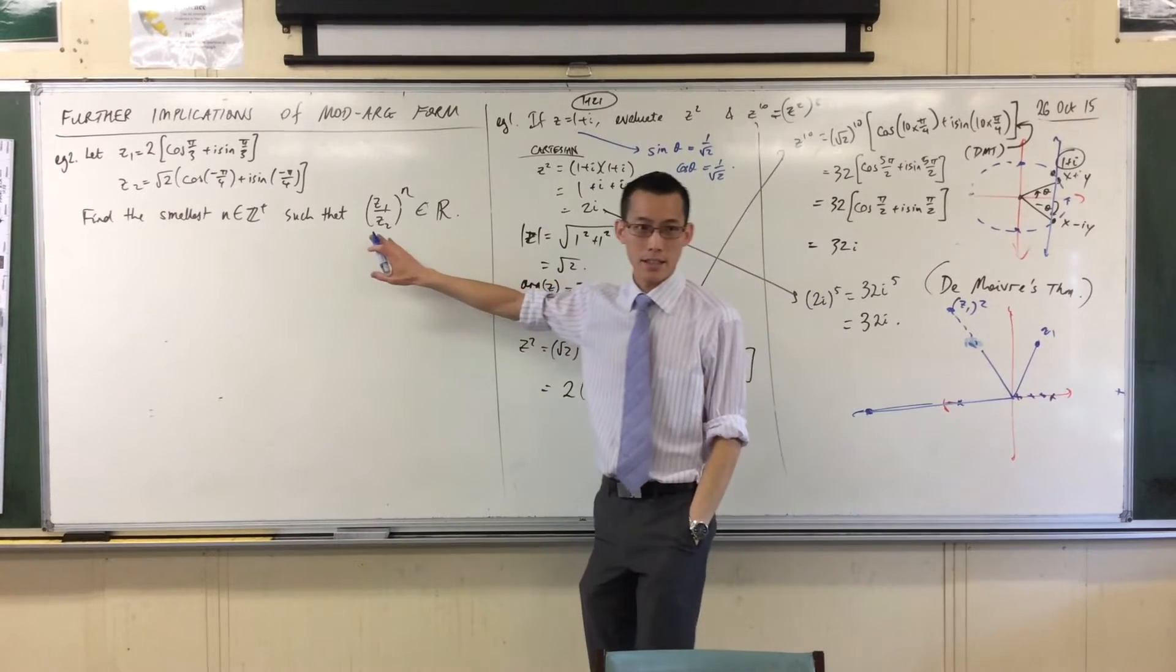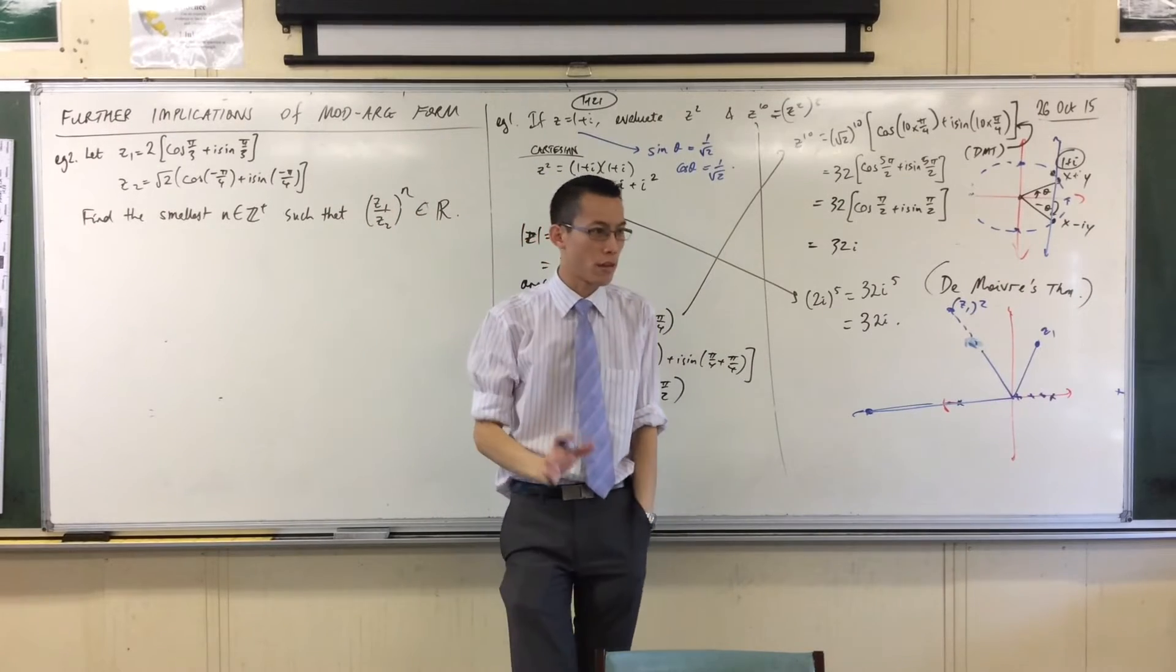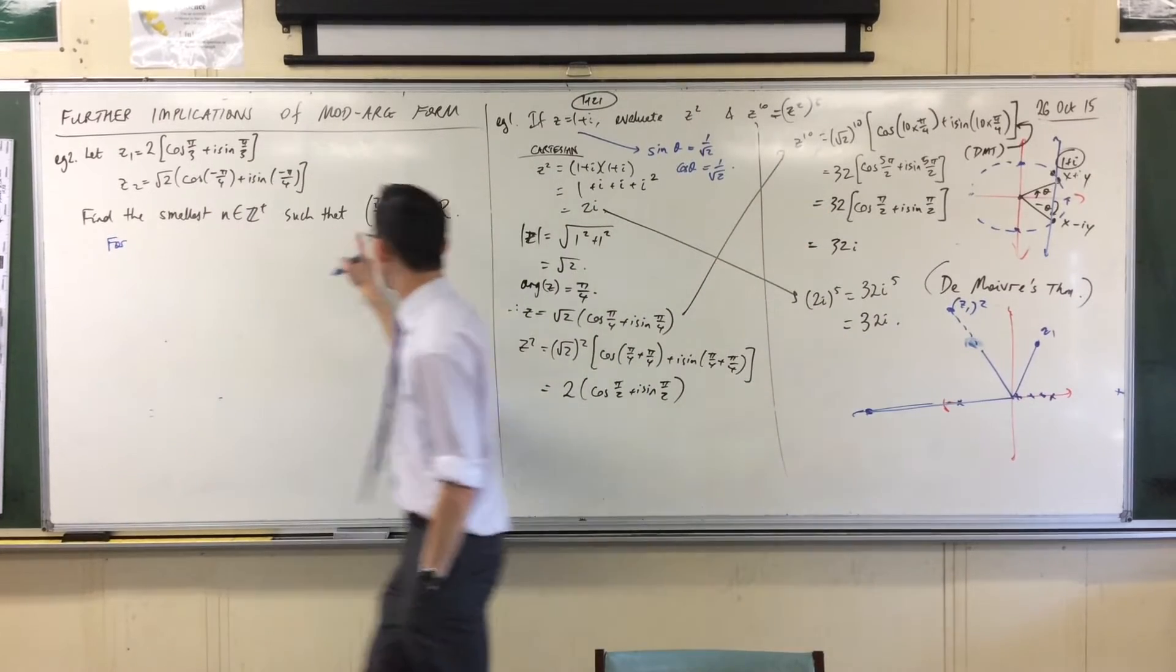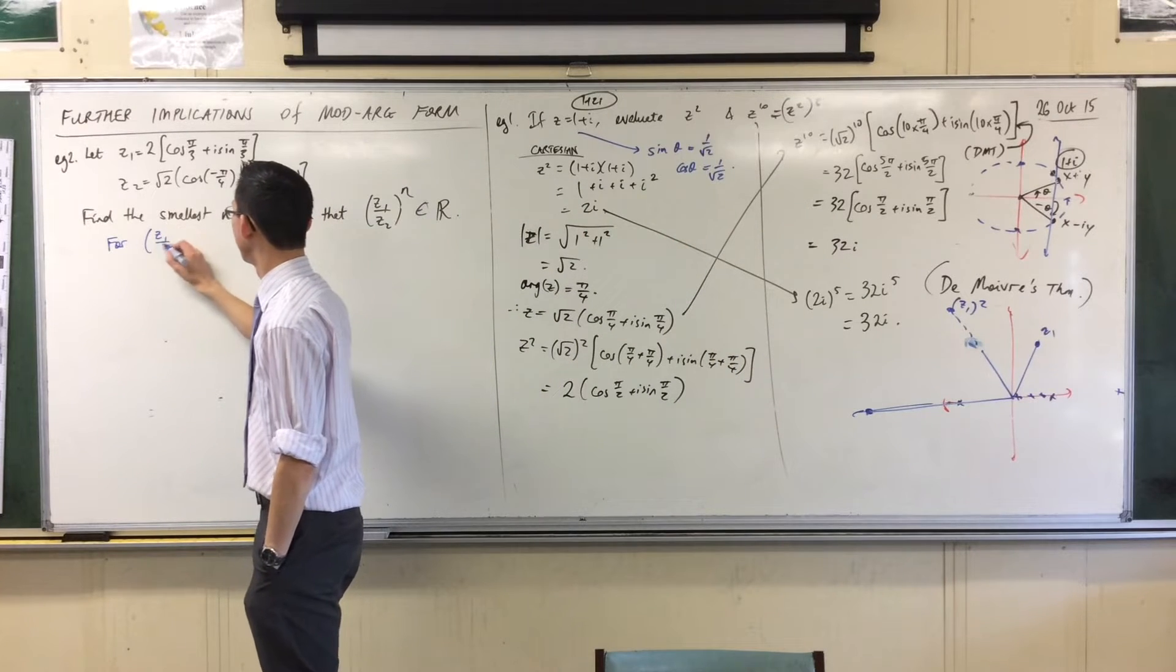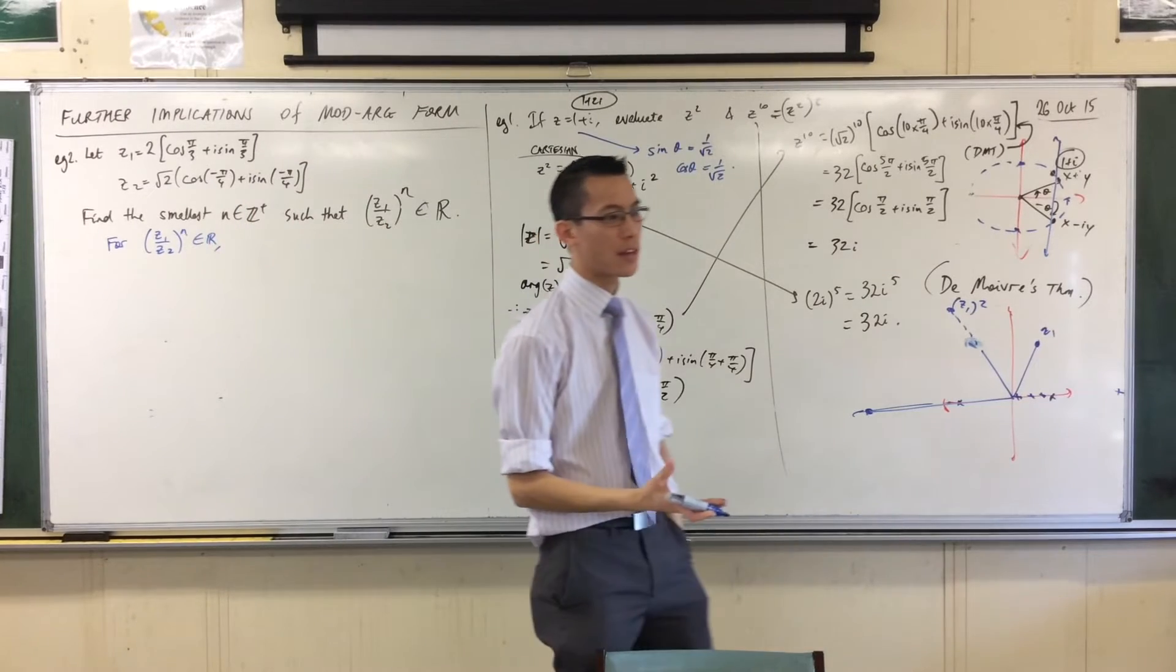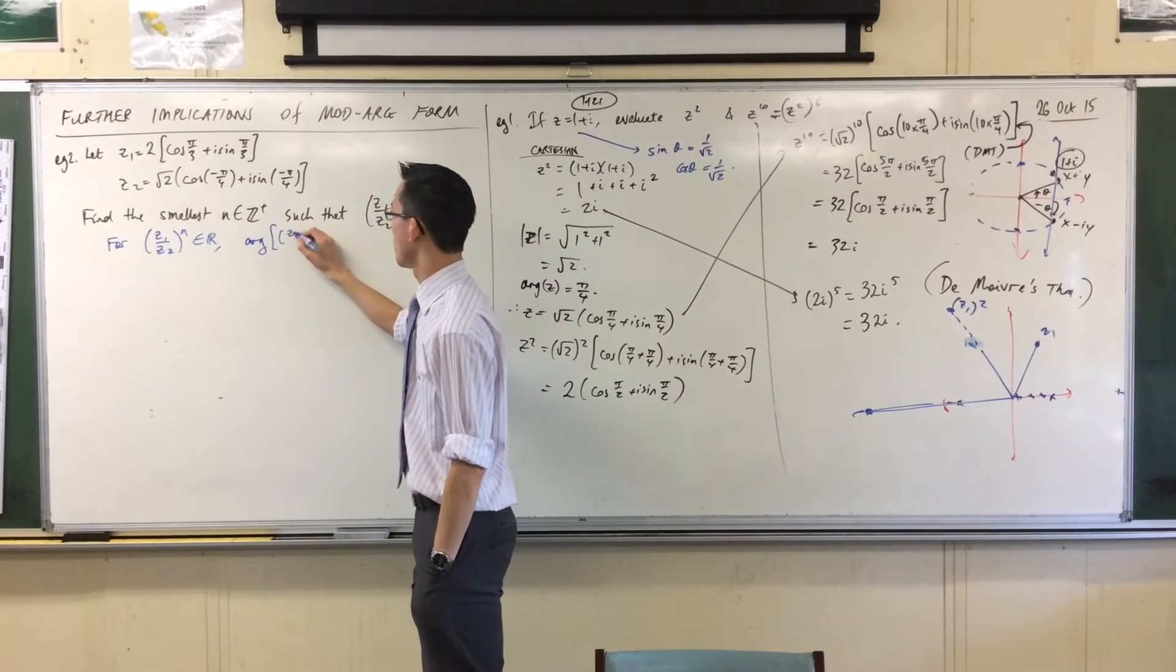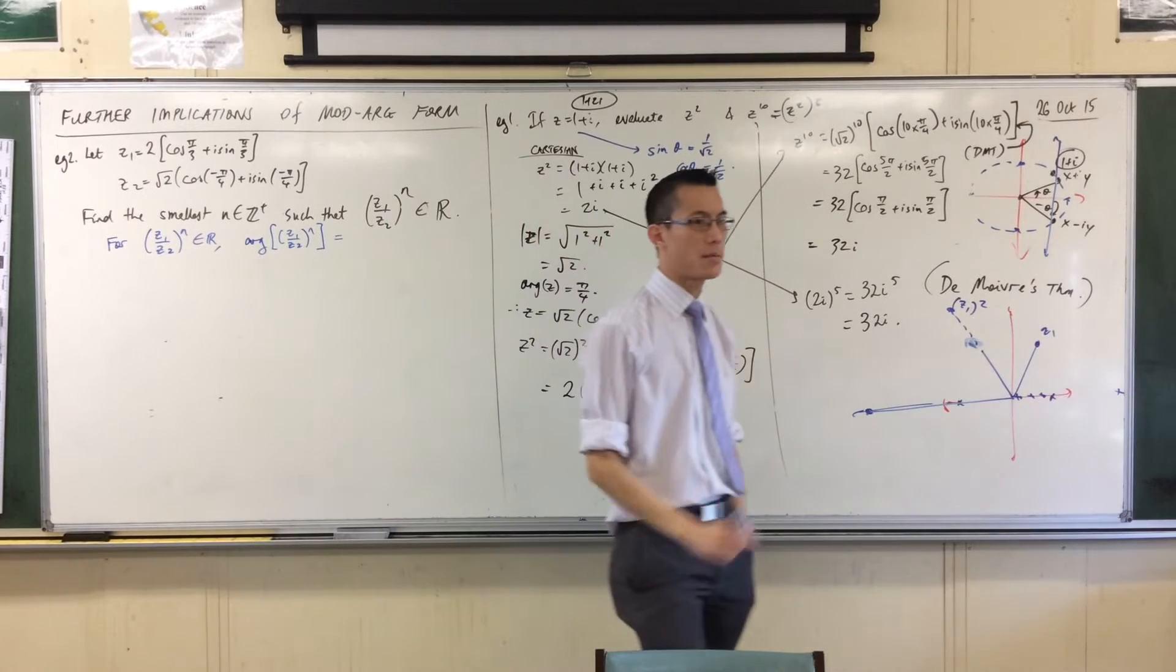So, now what I'm asking is something just a little more, just a little more complicated, that's all, in terms of the arithmetic of it. How am I going to state this? For a number, for this, to be wholly real, I just want to say something about its argument.